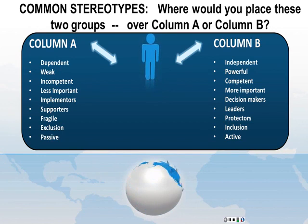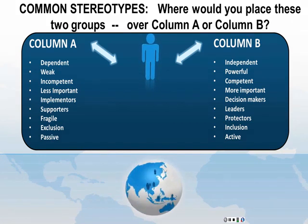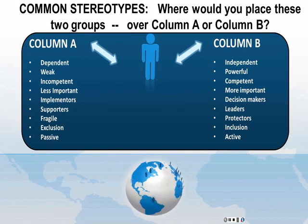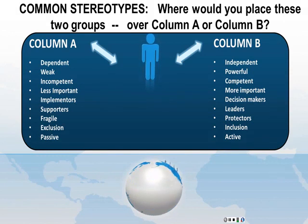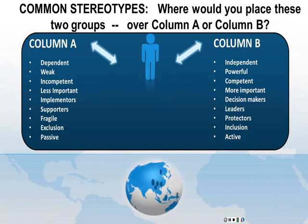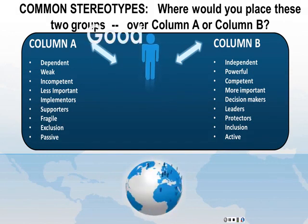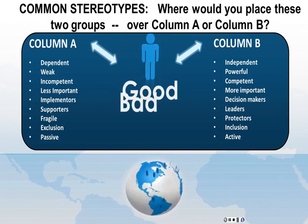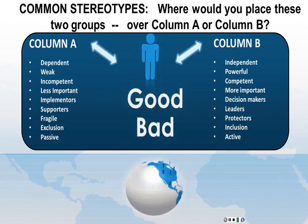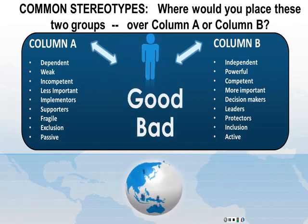Column B includes: independent, powerful, competent, more important, decision makers, leaders, protectors, inclusion, and active. So — where would 'good' fall? Do you think that's column A or column B?